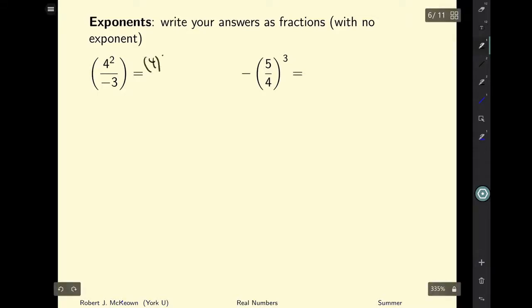What does 4 to the power of 2 mean? Well that just means it's 4 times 4 divided by negative 3 which is equal to 16 over negative 3, which is equal to negative 16 over 3. If the negative is in the denominator or numerator it doesn't matter. The whole fraction is negative.